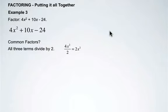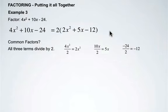4x squared divided by 2 is 2x squared, 10x divided by 2 is 5x, and negative 24 divided by 2 is negative 12. So we'll remove 2. What we're left with is 2x squared plus 5x minus 12.